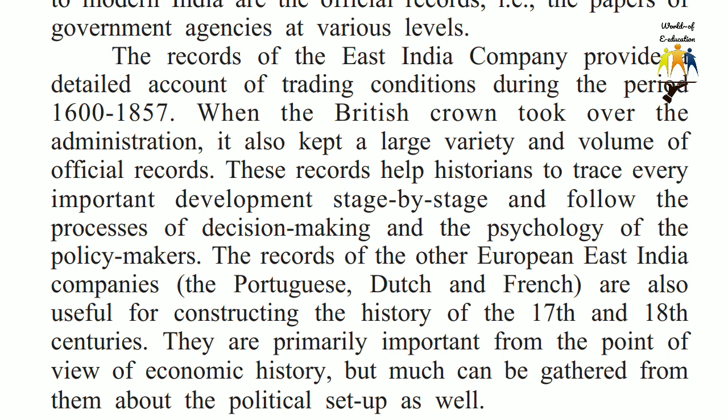The records of the East India Company provide a detailed account of trading conditions during the period 1600–1857. When the British Crown took over the administration, it also kept a large variety and volume of official records. These records help historians to trace every important development stage by stage and follow the processes of decision-making and the psychology of the policy-makers. The records of the other European East India Companies — the Portuguese, Dutch and French — are also useful for constructing the history of the 17th and 18th centuries.